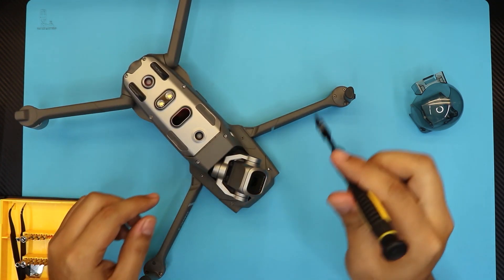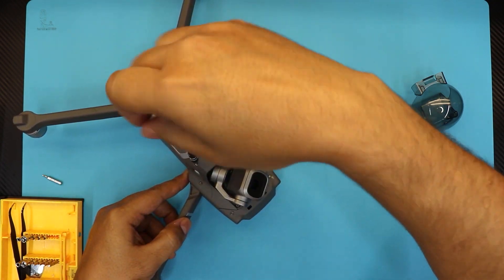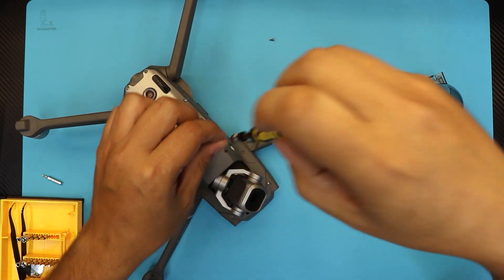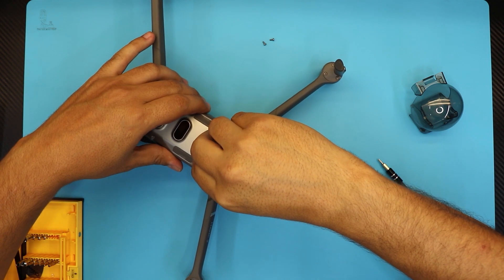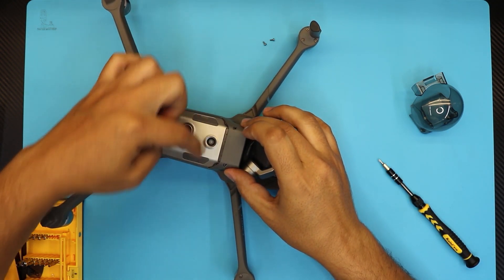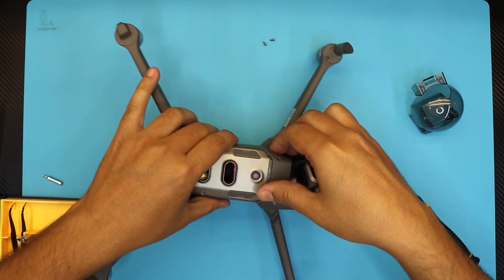Once you remove those, you wanna unscrew this one. Next, you wanna just lift up this one over here. Don't yank it out, there's two clips. You have to pull them apart, otherwise you're gonna break the clips.